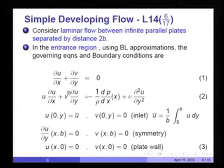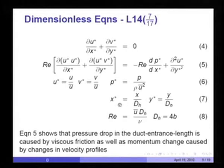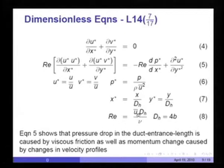We non-dimensionalize the equations where: u* = u/u-bar, v* = v/u-bar, p* = p/(ρ u-bar²), x* = x/d_h, y* = y/d_h. Here d_h is the hydraulic diameter. Reynolds number is defined based on mean velocity u-bar and hydraulic diameter d_h. For flow between parallel plates separated by distance 2b, d_h is equal to 4b.